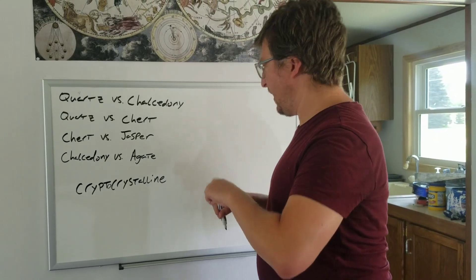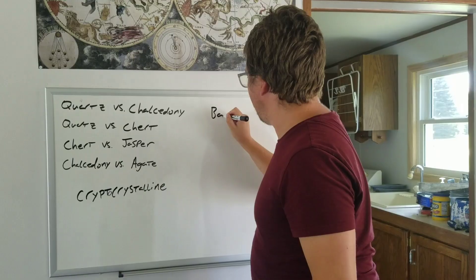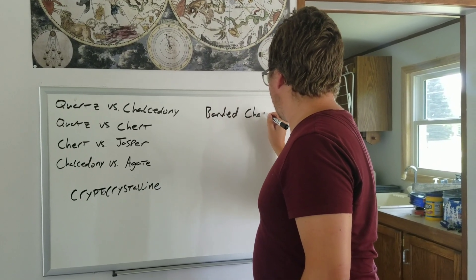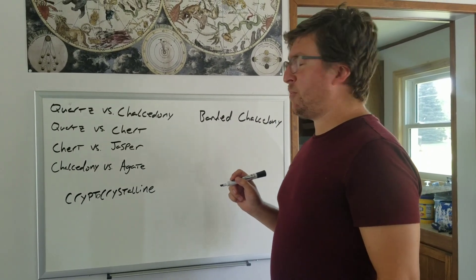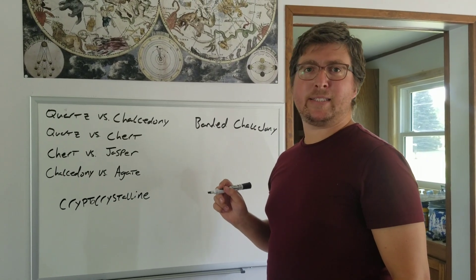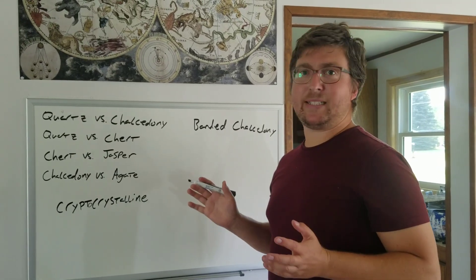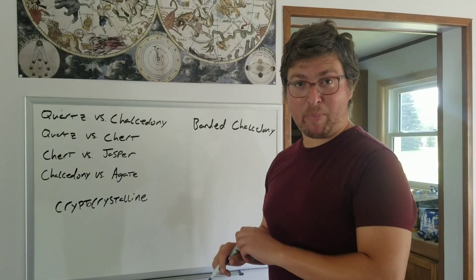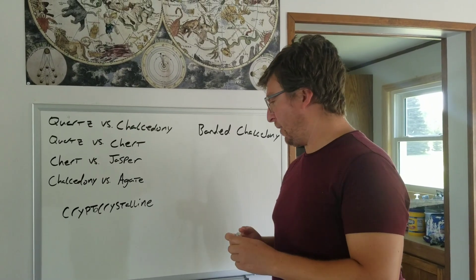So, what is an agate? An agate is banded chalcedony. And you should be able to shine a light on it and see some light passing through. It needs to be translucent. And that's it. Pretty straightforward. If you've got chalcedony, and it's got banding in it, and you can shine a light on it and see through it at all, then you've got an agate.